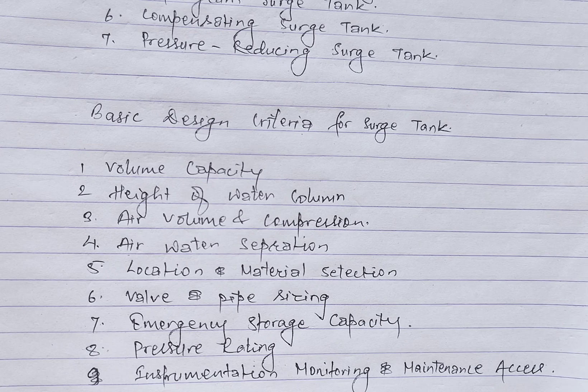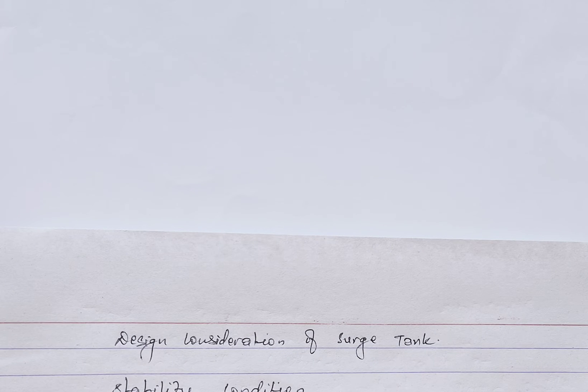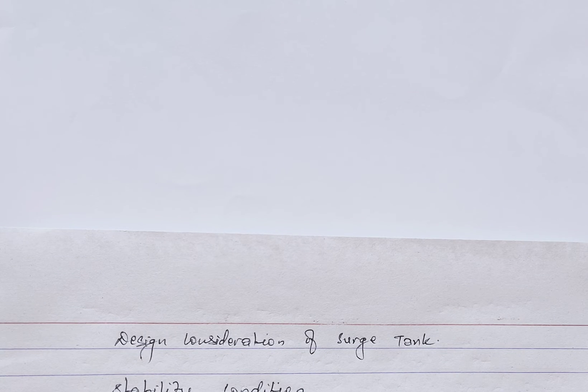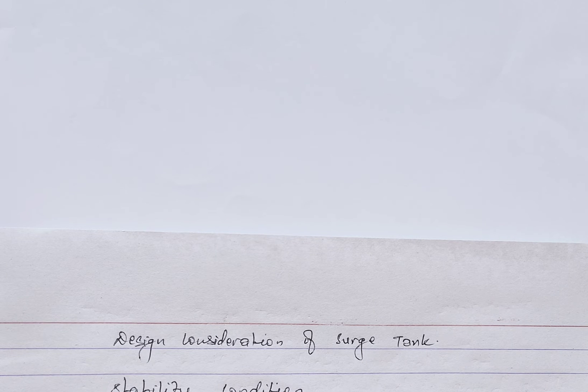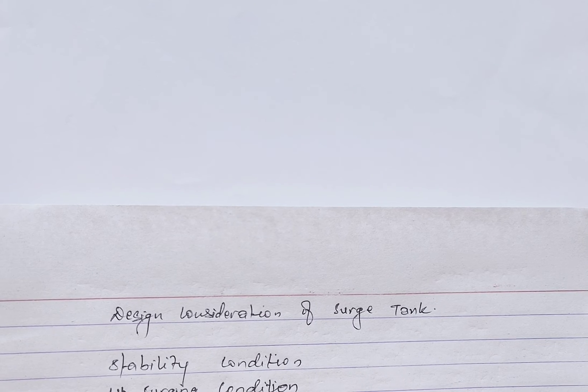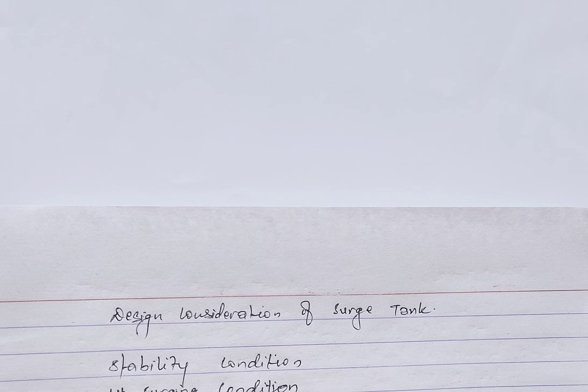Now let's talk about the design considerations for the source tank. Designing a source tank involves careful consideration of various factors to ensure its effectiveness in mitigating pressure fluctuations in a fluid system. The first is the stability condition: small water level fluctuations during operation should be damped and water in the source tank should be made stable.